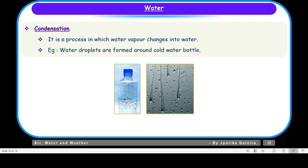If we talk about condensation, it is a process in which water vapor changes into water — that means condensation happens on cooling. When the water vapors cool down, they form water droplets. For example, water droplets form around a cold water bottle or a window pane. Water vapor present in the air, when it touches the cold surface of the water bottle or window pane, condenses to form water droplets.